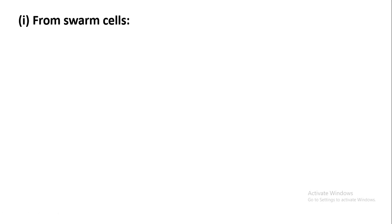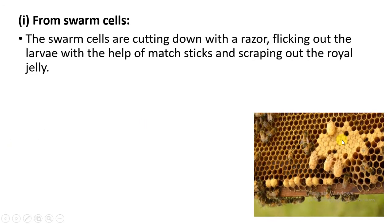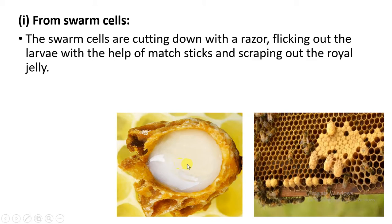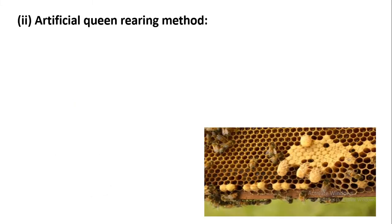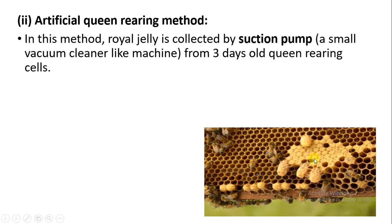The first method is from swarm cells. Swarm cells are cells where developmental stages are kept. These swarm cells are cut down to expose the cells in which the larvae are being kept. The larvae are removed from the mass sticks and the remaining royal jelly is collected. Royal jelly is stored in amber colored bottles in the freezer, away from sunlight, which can affect the royal jelly.